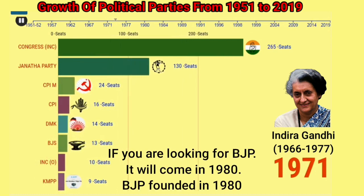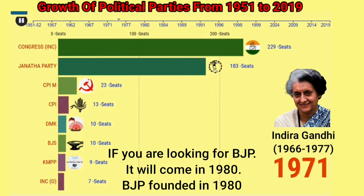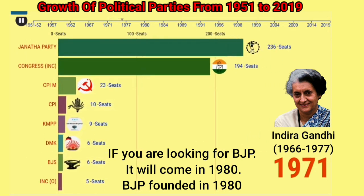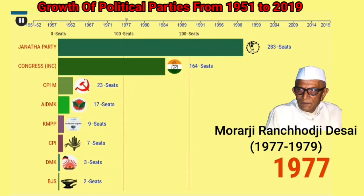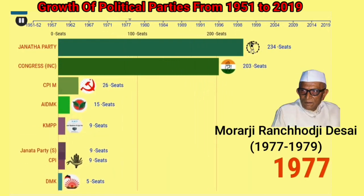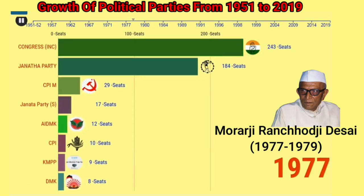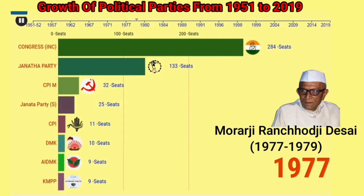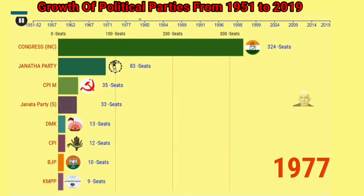In the 1977 election, the Janata Party got 298 seats and formed the government. Morarji Desai became the Prime Minister of India from the Janata Party and served as the fourth Prime Minister of India from 1977 to 1979.